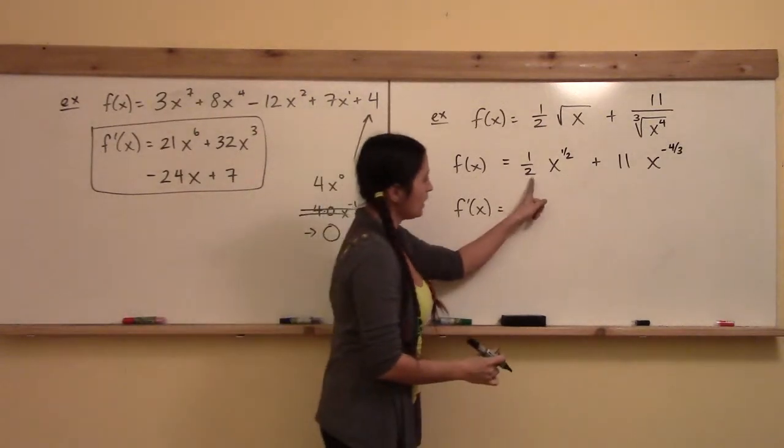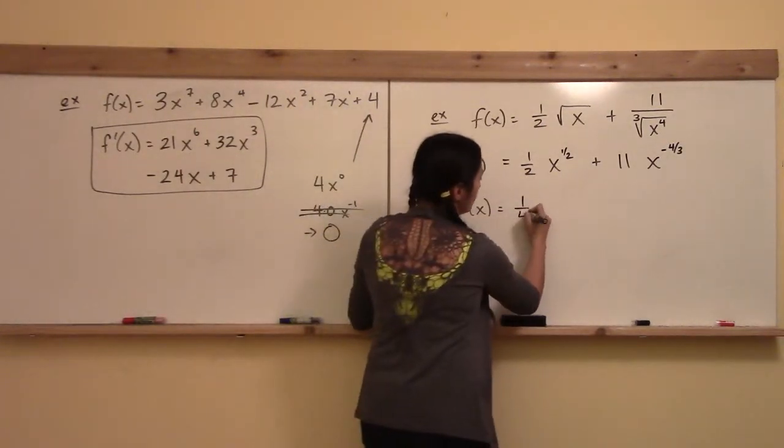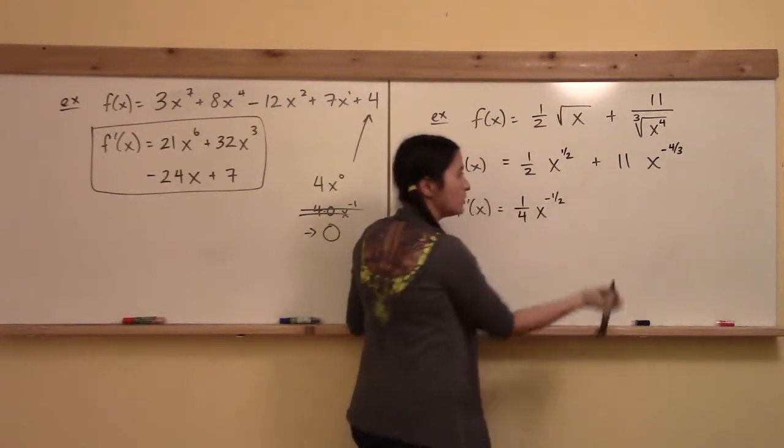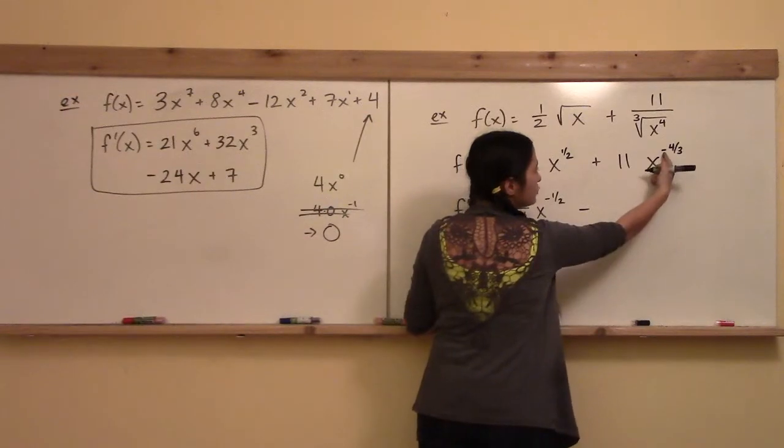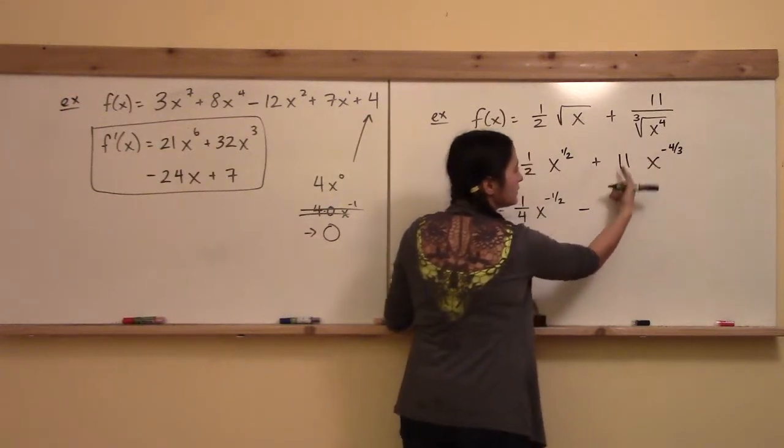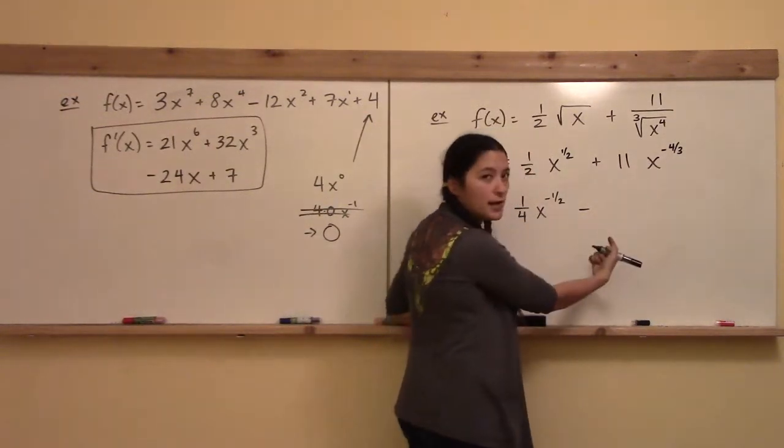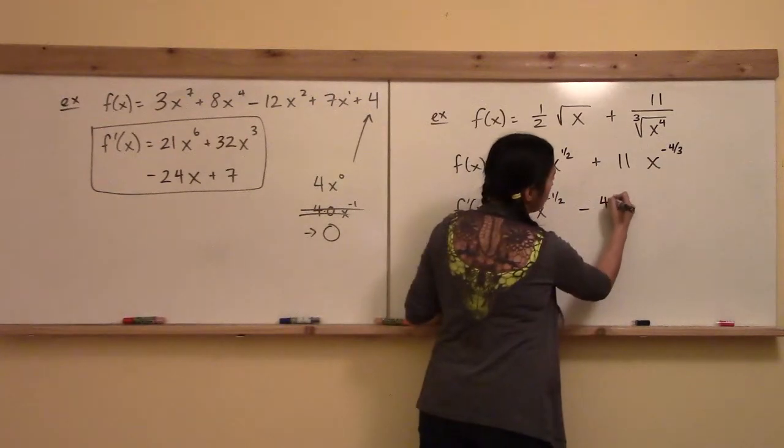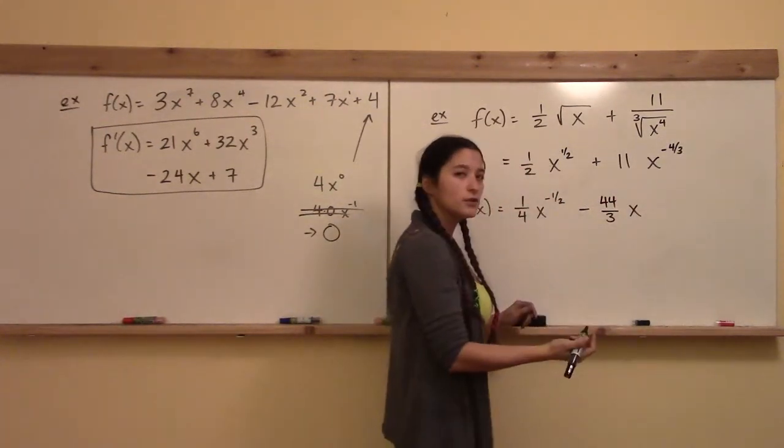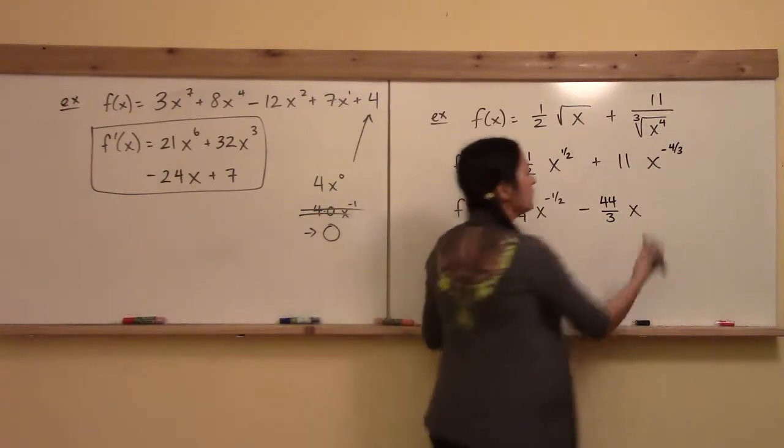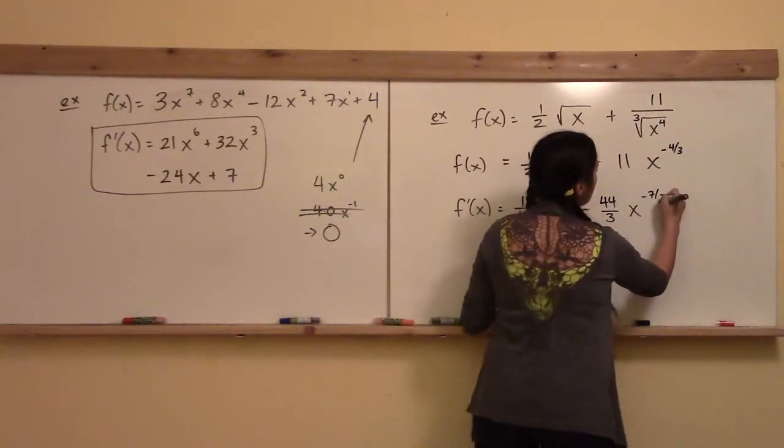So 1/2 times 1/2 is 1/4, and 1/2 minus 1 is negative 1/2. Here, I'm going to multiply those out, and because there's a negative up here, it's going to cause the coefficient in front now to become negative. So I have negative 44/3, and I have x^(-4/3) minus another one, which is minus 7/3.